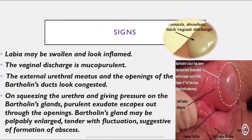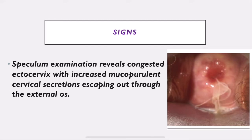To summarize the signs: labia is swollen and inflamed; vaginal discharge is present; urethral meatus and Bartholin's gland are congested. Squeezing the urethra and applying pressure on Bartholin's gland produces mucopurulent discharge, suggesting abscess. Speculum examination reveals a congested ectocervix with increased mucopurulent cervical secretion escaping through the external os, as seen in the picture.